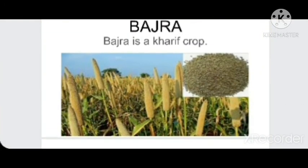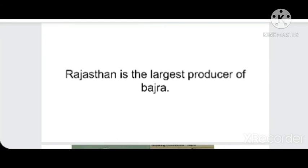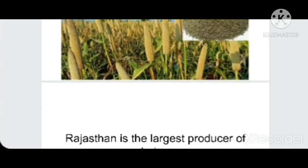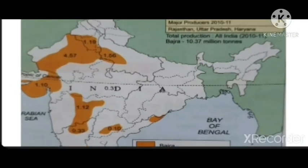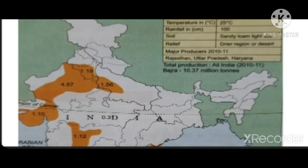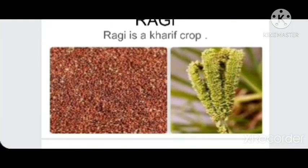Bajra is a Kharif crop cultivated in drier regions; Rajasthan is the largest producer. It is cultivated in relation with monsoon rainfall — where the monsoon is unreliable and rainfall is poor, Bajra is grown. The average temperature condition is 25 degrees Celsius, rainfall is around 100 centimeters, and it can be cultivated in sandy loam or light soil.